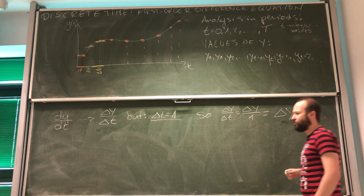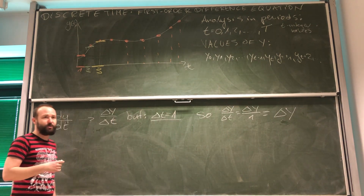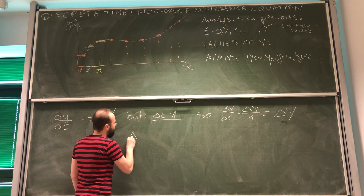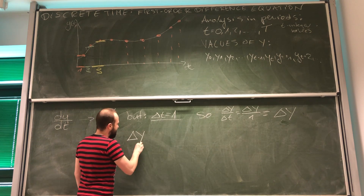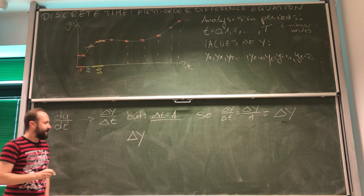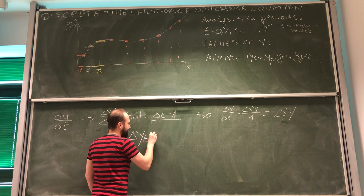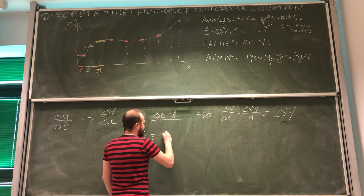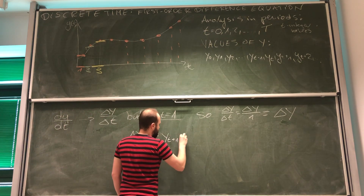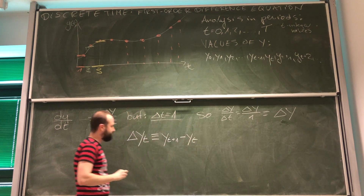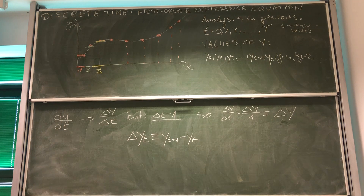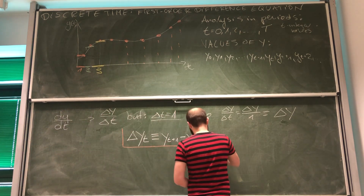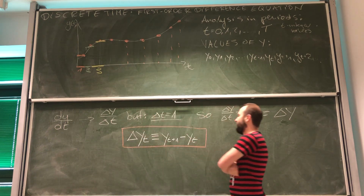We will deal with higher order difference equations in the future. For now, from this point on, Δyt is defined as y(t+1) minus yt. This is the convention from your book and this is what we are going to be using.